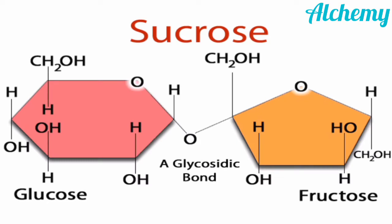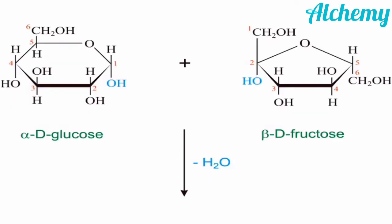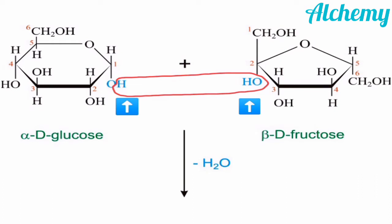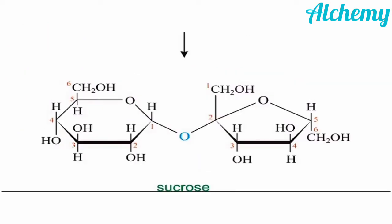Now we will study the structure and formation of sucrose. Sucrose is formed by the combination of alpha-D-glucose and beta-D-fructose. A bond is formed between the first carbon of glucose and the second carbon of fructose. Hydrogen from the first carbon of glucose and OH from the second carbon of fructose combine together to form a water molecule which gets eliminated, resulting in the formation of sucrose.